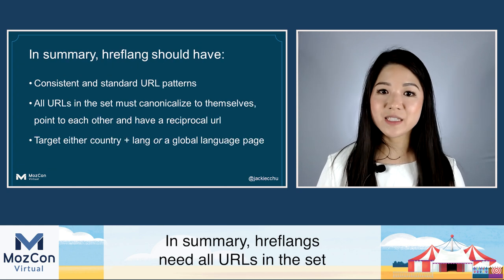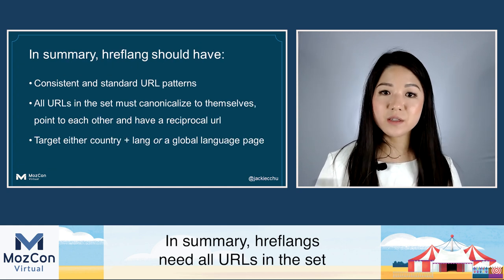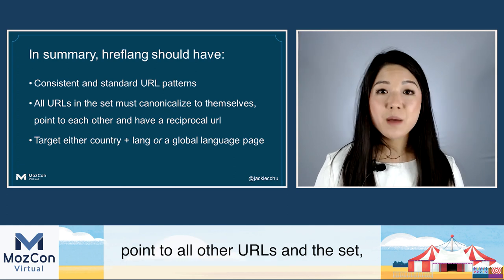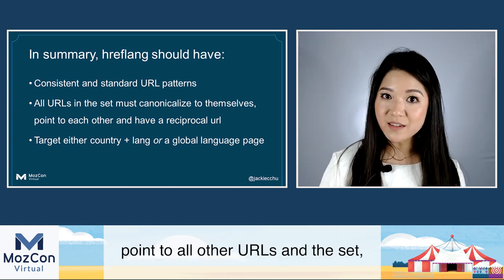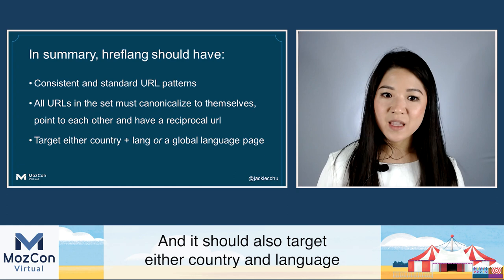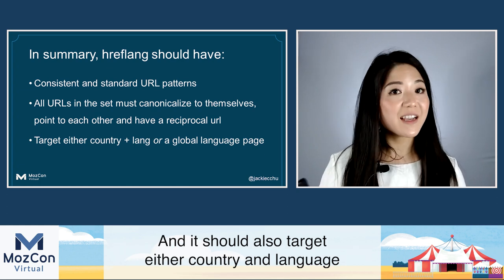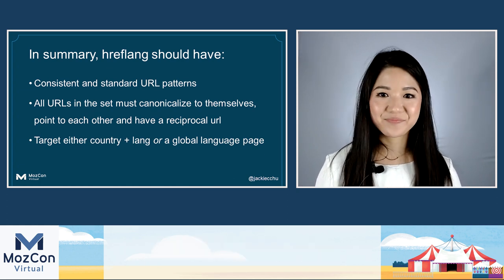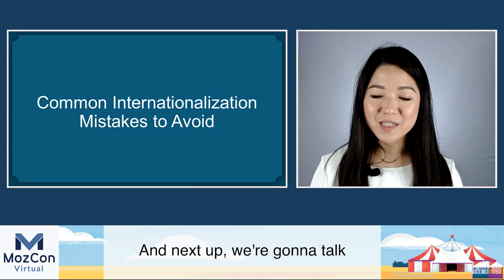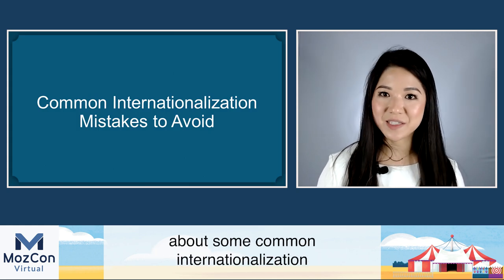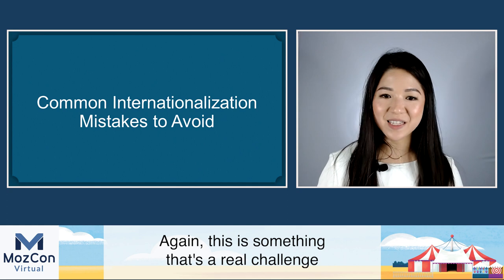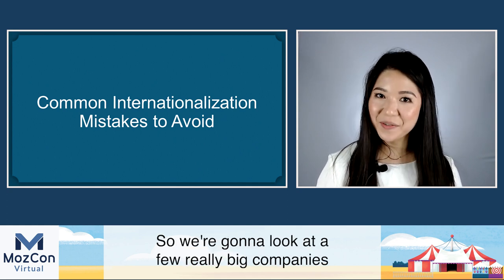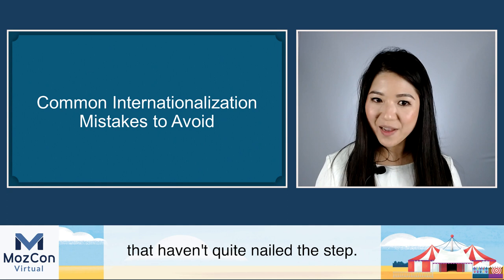In summary, hreflang needs all URLs in the set to canonicalize themselves, have an hreflang to themselves, point to all other URLs in the set, and have all those URLs point back to it. It should also target either country and language or a global language page. Next up, we're going to talk about some common internationalization mistakes to avoid — this is a real challenge for really big companies.